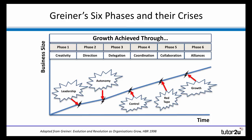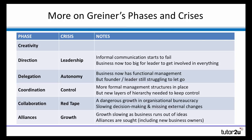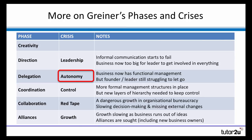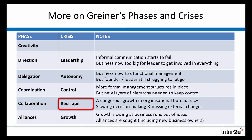We're seeing that a lot in the UK supermarket sector at the minute, with many layers of the hierarchy being removed in a bid to reduce costs and hopefully stimulate growth. So that's Greiner's model — six phases of growth, but the key thing to remember are these five crises: leadership, autonomy, control, red tape, and finally growth.